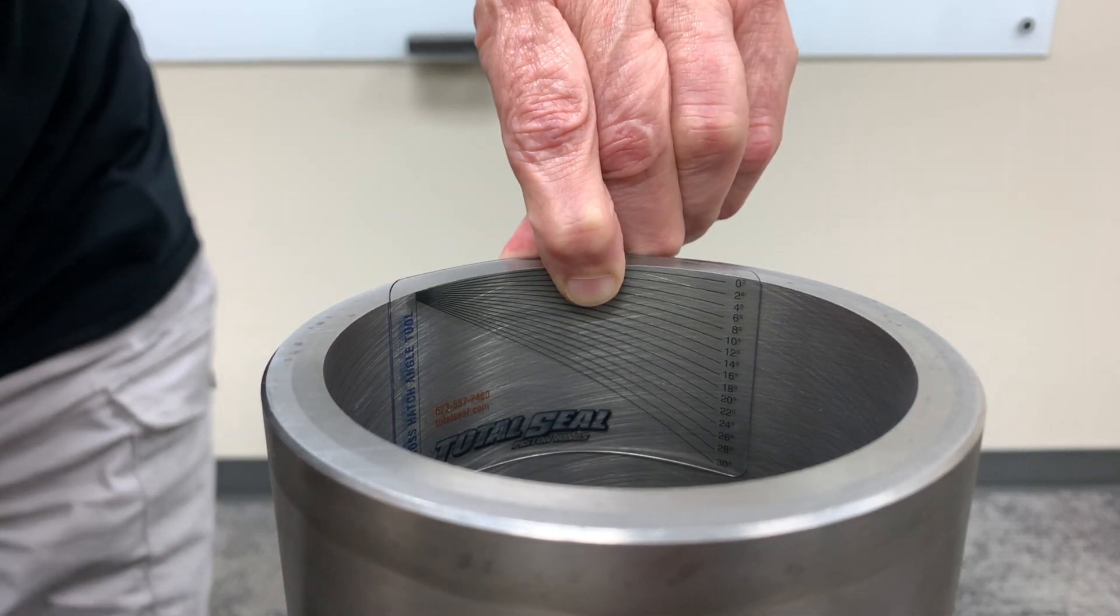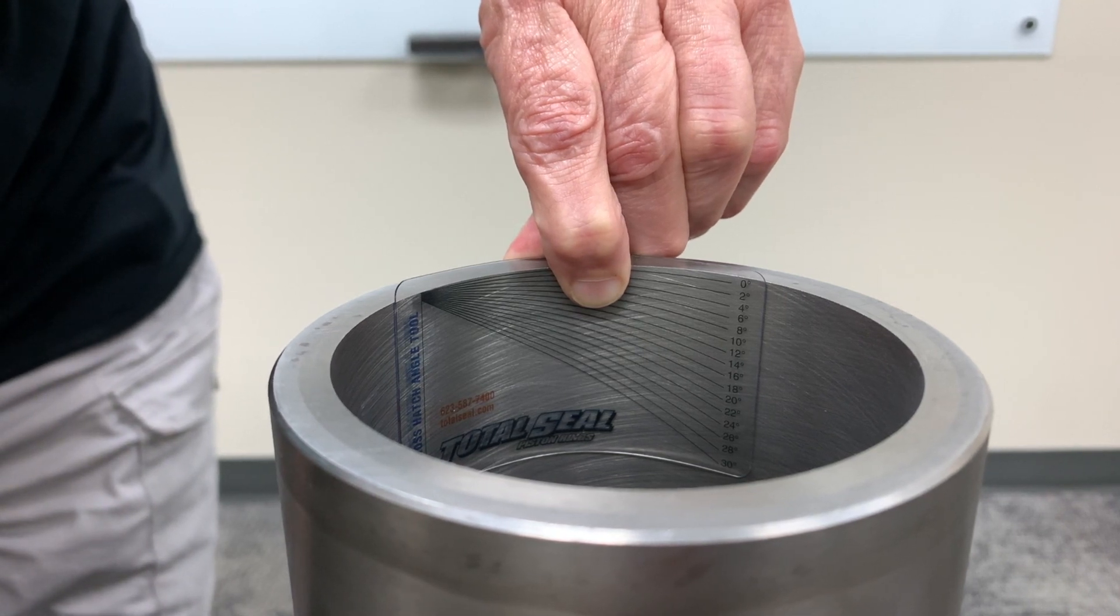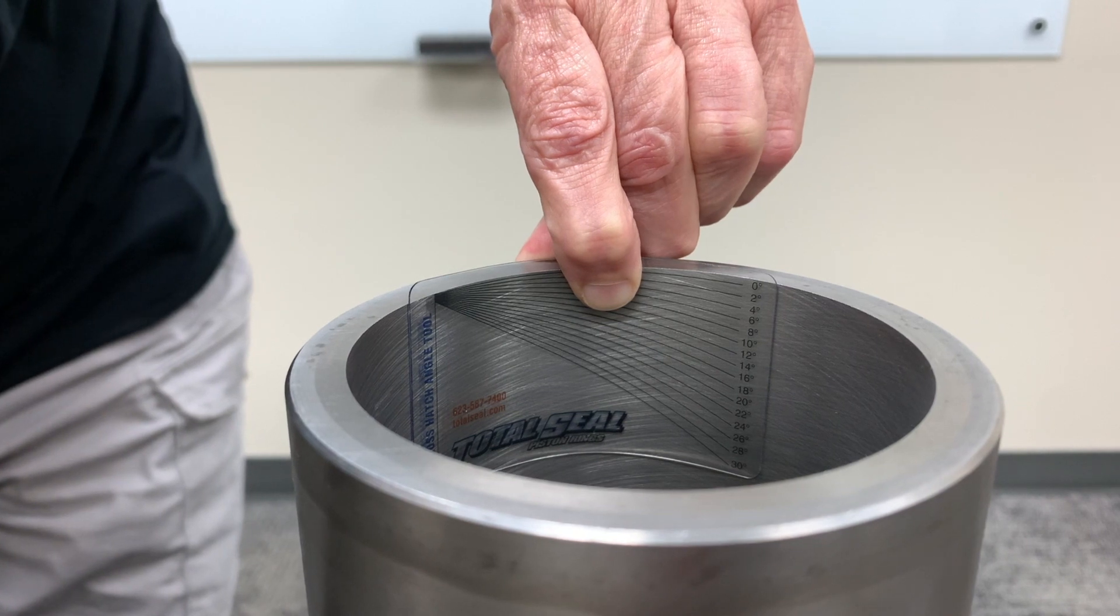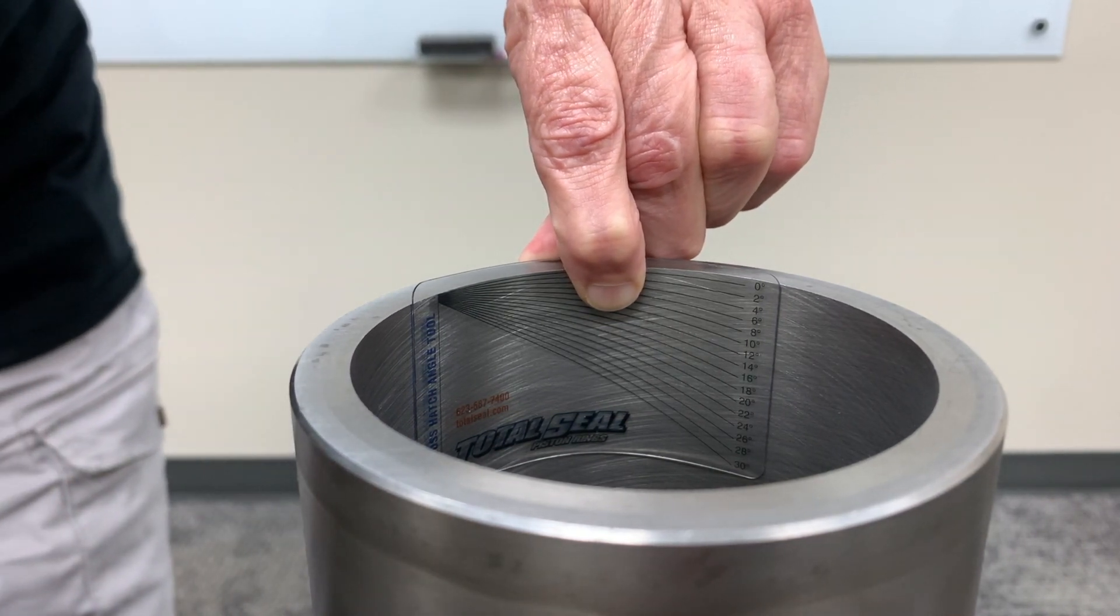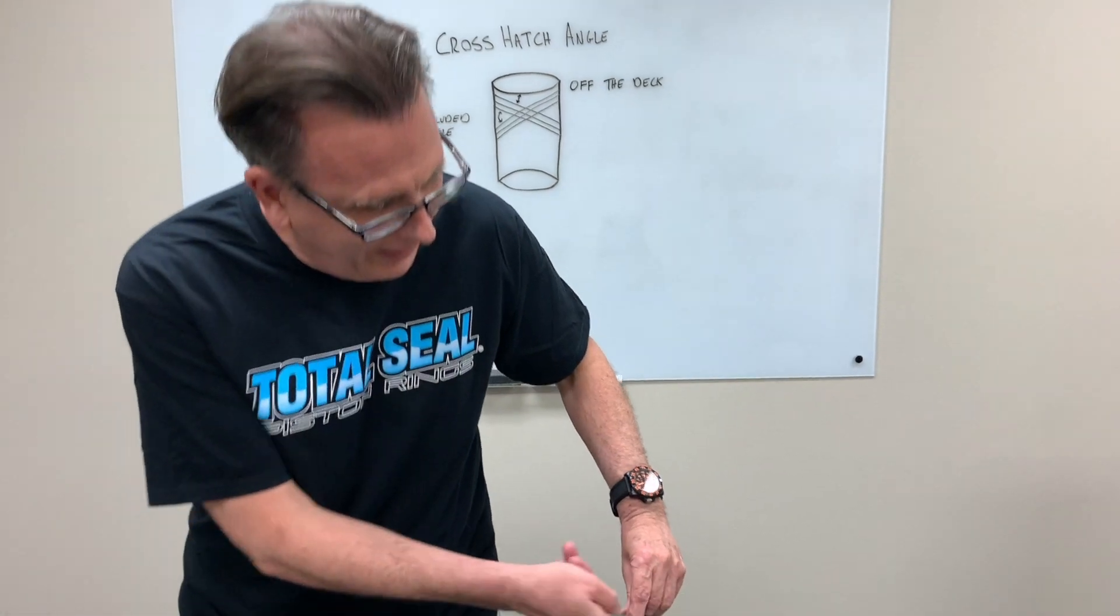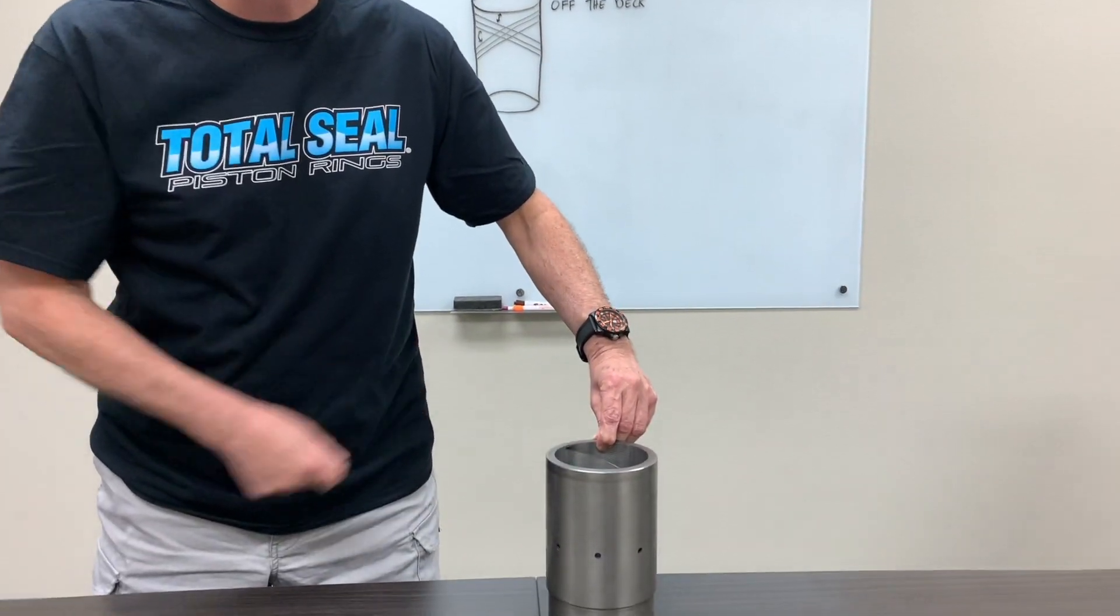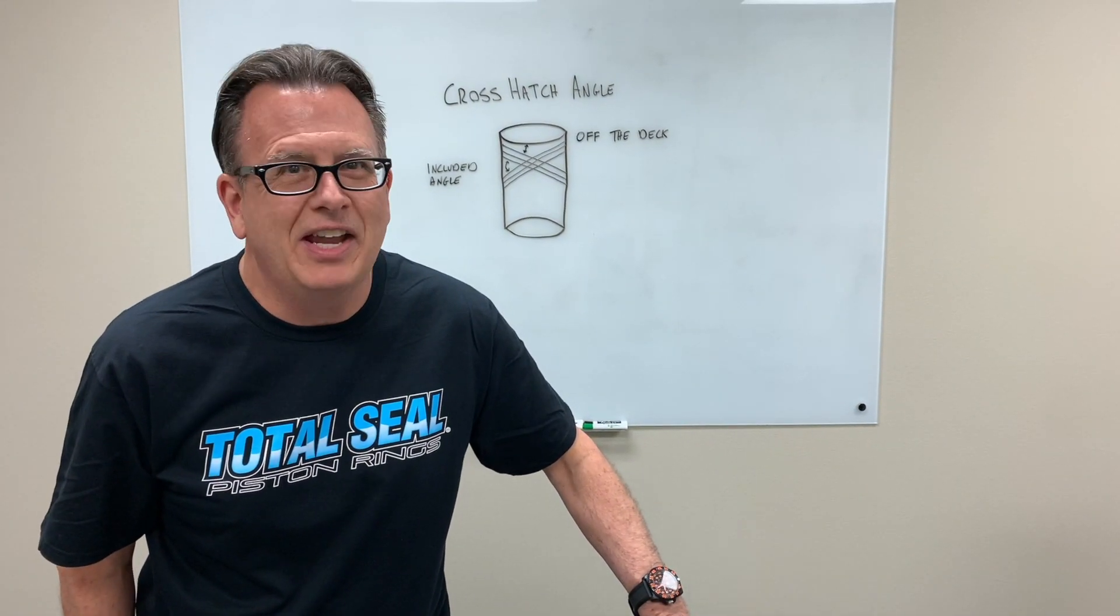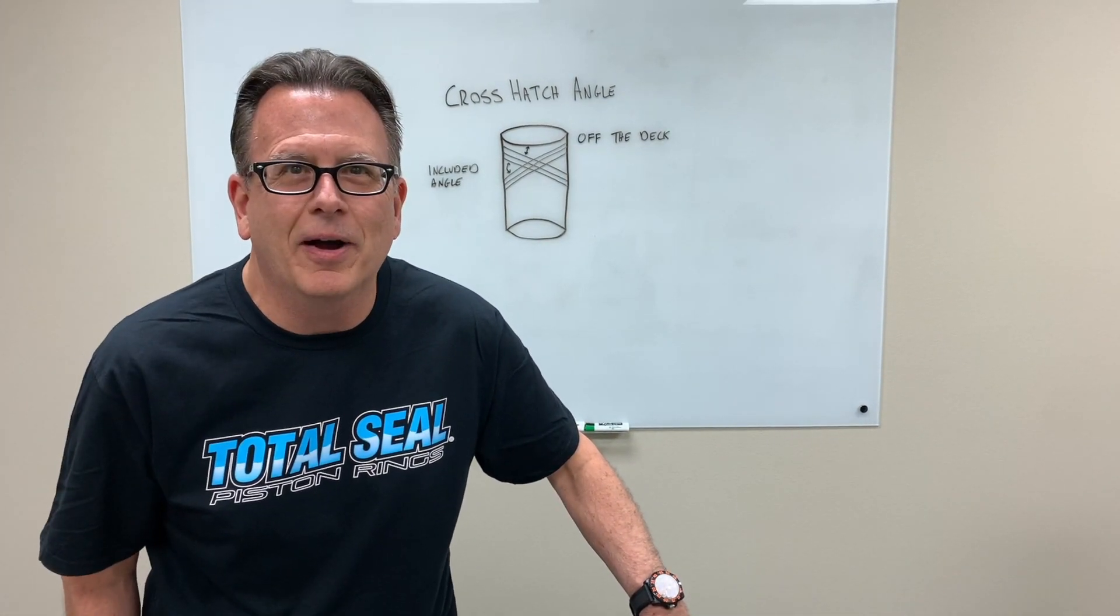So in a typical application, V8, most applications, you're looking for something in the 20 to 22-degree angle, which would be double that in your included angle. I have quite a few customers that will use this and cut it to their desired angle as a quick reference. So it's always handy to have at least a few of these in your box.